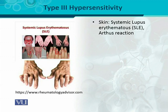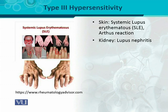Another important organ is the kidney. If the immune complex deposits in the kidney, it will ultimately cause lupus nephritis. Nephritis means inflammation of the nephron. Just as lupus occurs in the skin with deposition causing redness and undesirable effects, similarly in the kidney, lupus nephritis occurs as a consequence of type 3 hypersensitivity reactions.